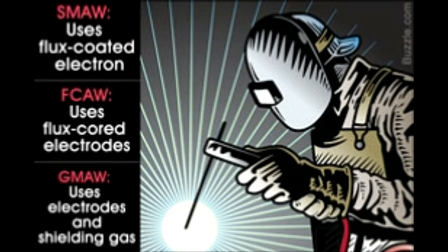The main difference between the SMAW, FCAW, and GMAW welding methods is in the material used to protect the weld pool from atmospheric contamination. But there's much more than just this. Buzzle gives you the comparison between these methods in more detail.